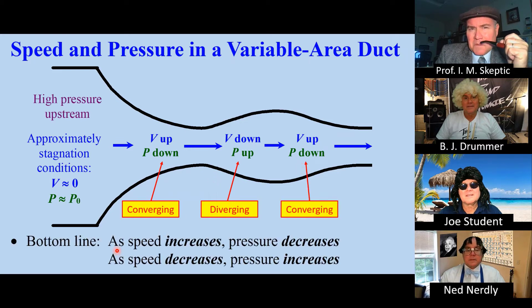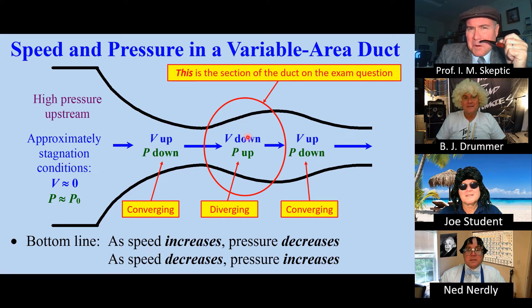This part's also converging. The bottom line is that as speed increases, pressure decreases, and as speed decreases, pressure increases. Only this part is the section of duct that was on the exam. Thanks, Professor — that makes sense. Of course it does.